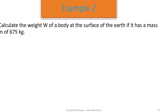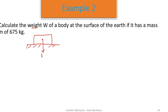Calculate the weight of a body at the surface of the earth if it has a mass of 675 kilograms. We have a block on the surface of the earth. The weight is acting downwards as a result of gravity. The weight of a body is given as mass times acceleration, and since it is acted upon by acceleration due to gravity, we represent it by g.